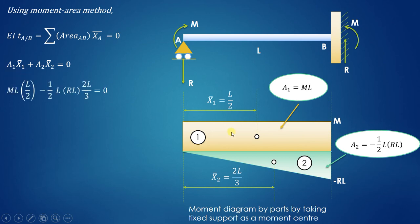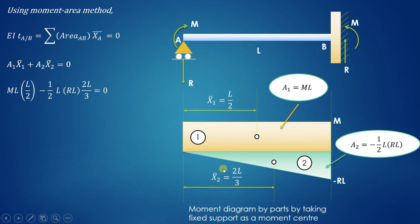Therefore A1·X1 bar plus A2·X2 bar equals zero. Substituting: A1 is M·L, X1 bar is L/2; A2 is negative one-half·L·RL, and X2 bar is 2L/3. This gives M·L·(L/2) minus (1/2)·L·RL·(2L/3) equals zero. Simplifying, M·L squared upon 2 minus R·L cubed upon 3 equals zero.